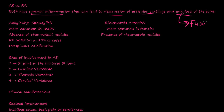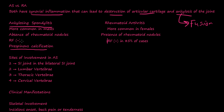Ankylosis means fusion — fusion of a joint. In ankylosing spondylitis, it's more common in males. There's absence of rheumatoid nodules. AS patients are RF negative — they do not have rheumatoid factor, whereas in rheumatoid arthritis, patients do have rheumatoid factor about 80-85% of the time. The sites of involvement in AS are the bilateral SI joint, lumbar vertebrae, thoracic vertebrae, and cervical vertebrae — the spine and SI joints.